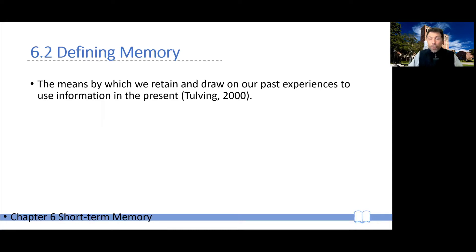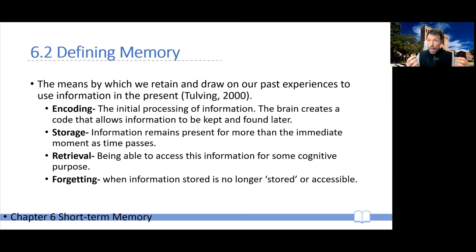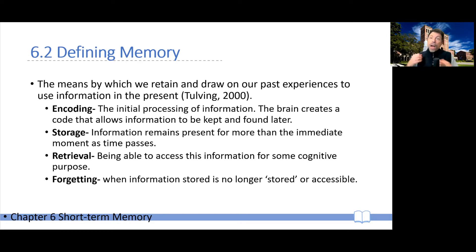There are several really interesting aspects to memory. For example, encoding — which is the process of, once information is in, how do we process it? How does our brain mark information so that it can be kept and then, at a later time, used or retrieved? And then how do we store information — how is it kept, once it's encoded, inside our minds over time, for potentially the rest of our lives?